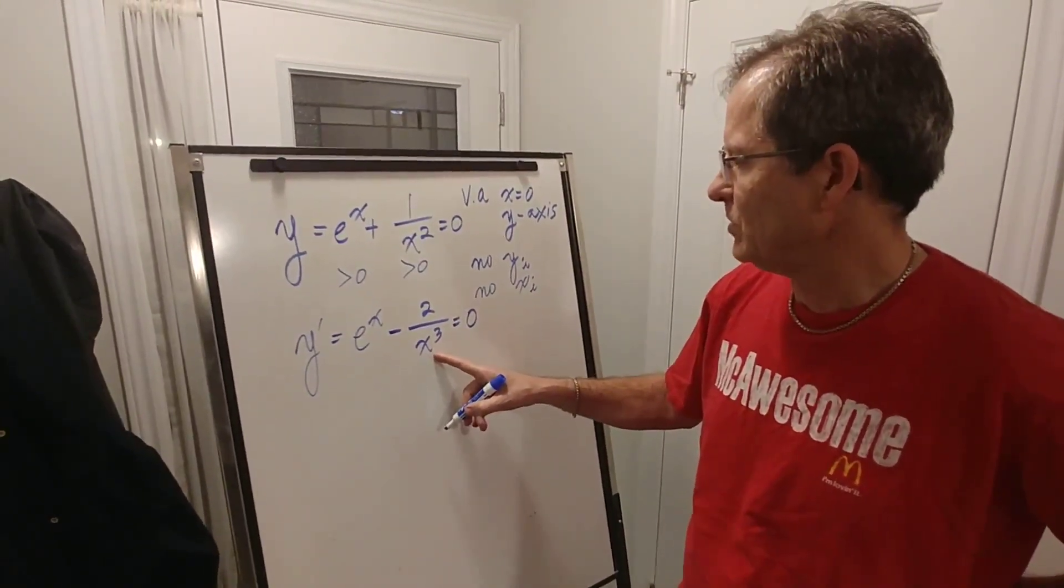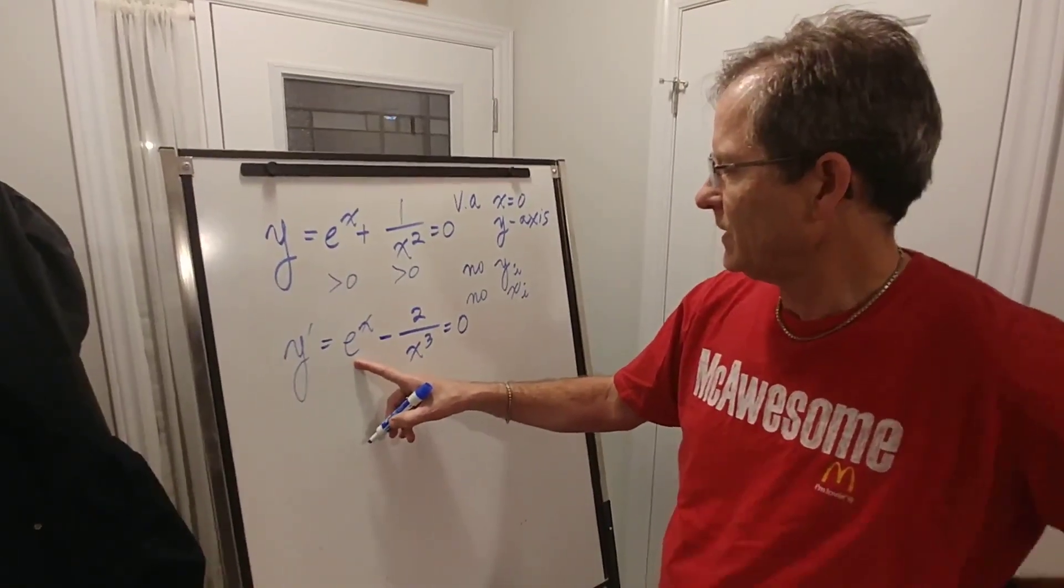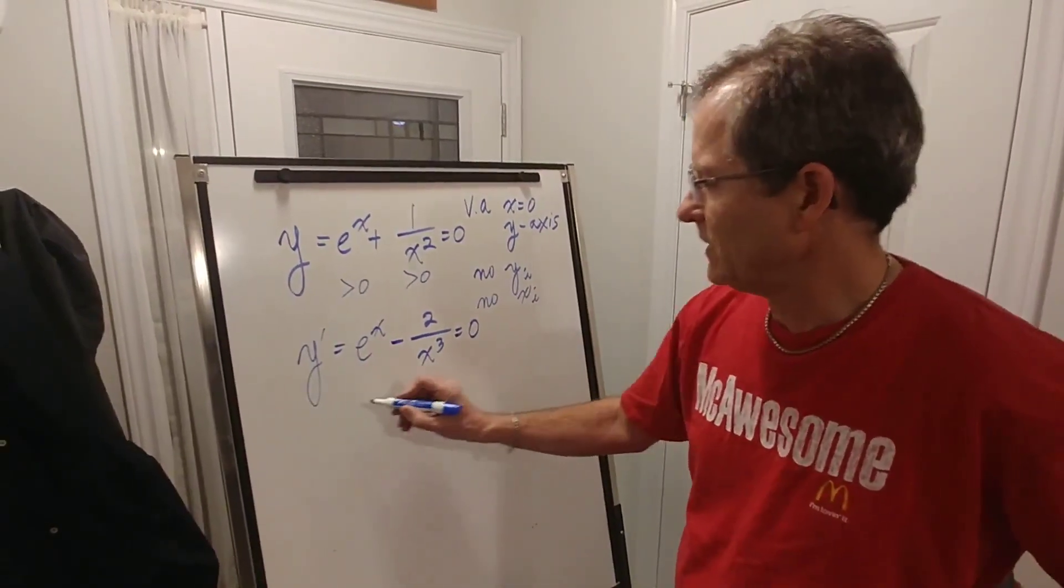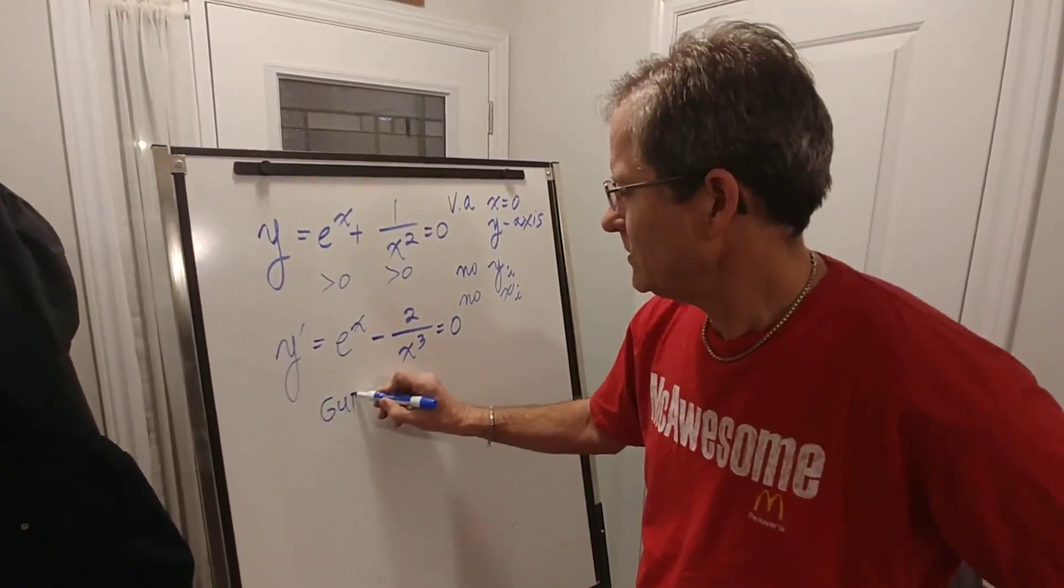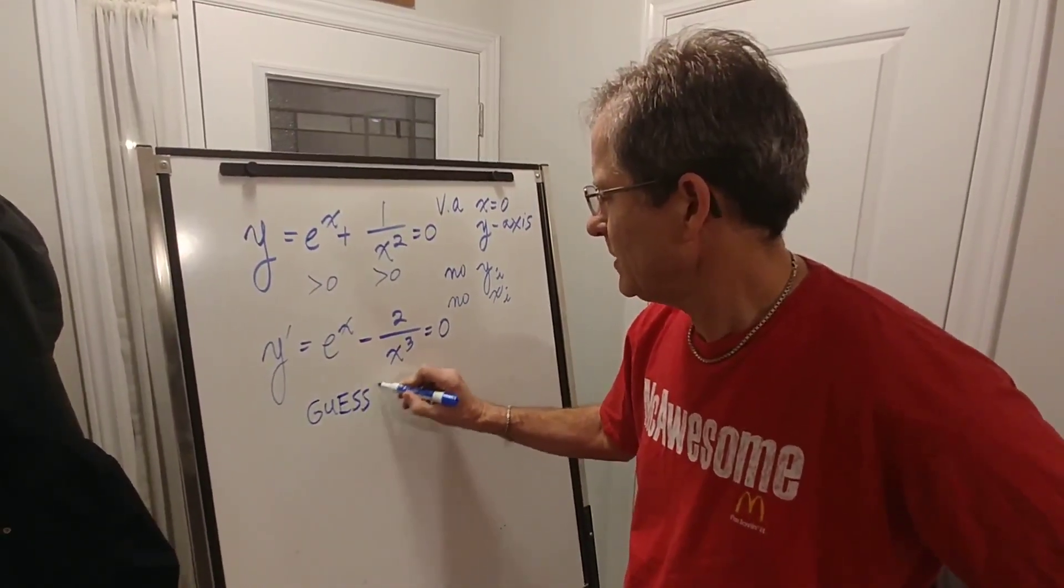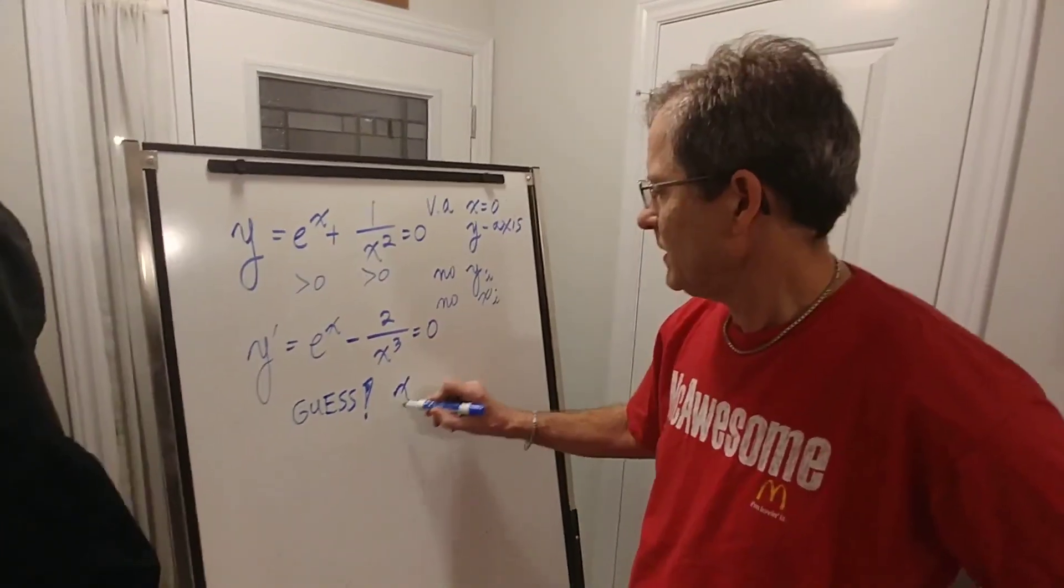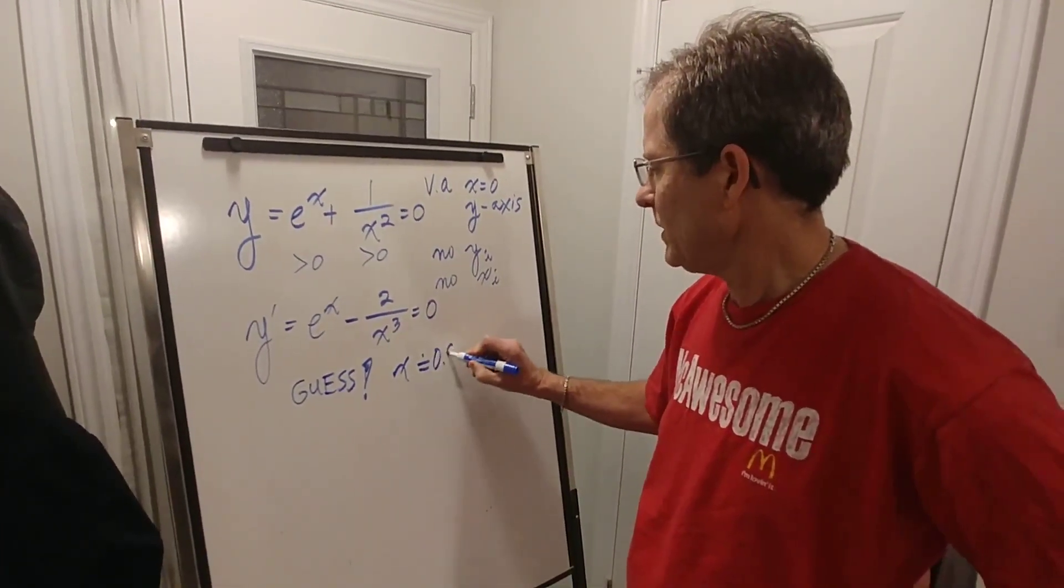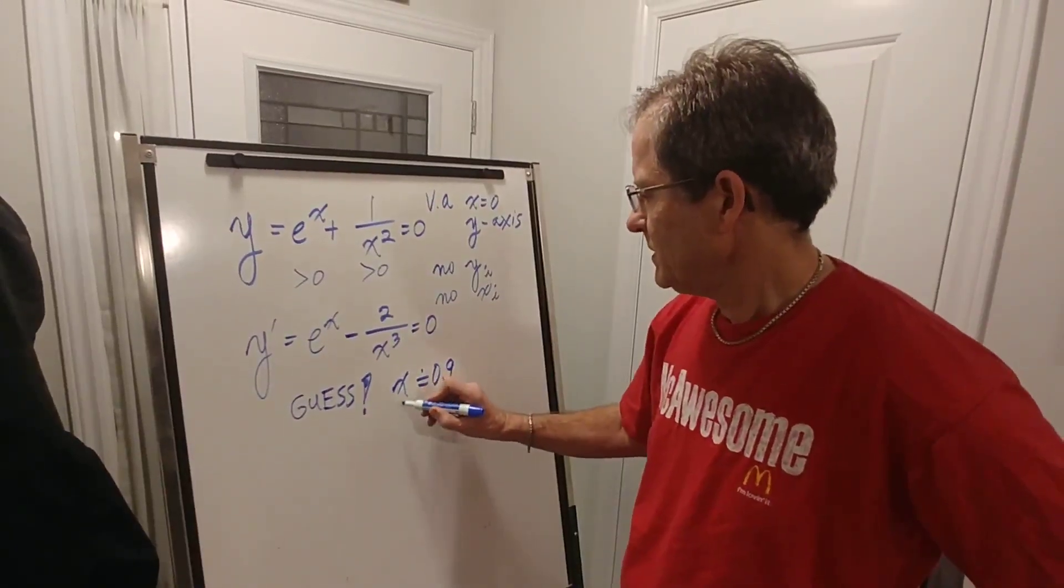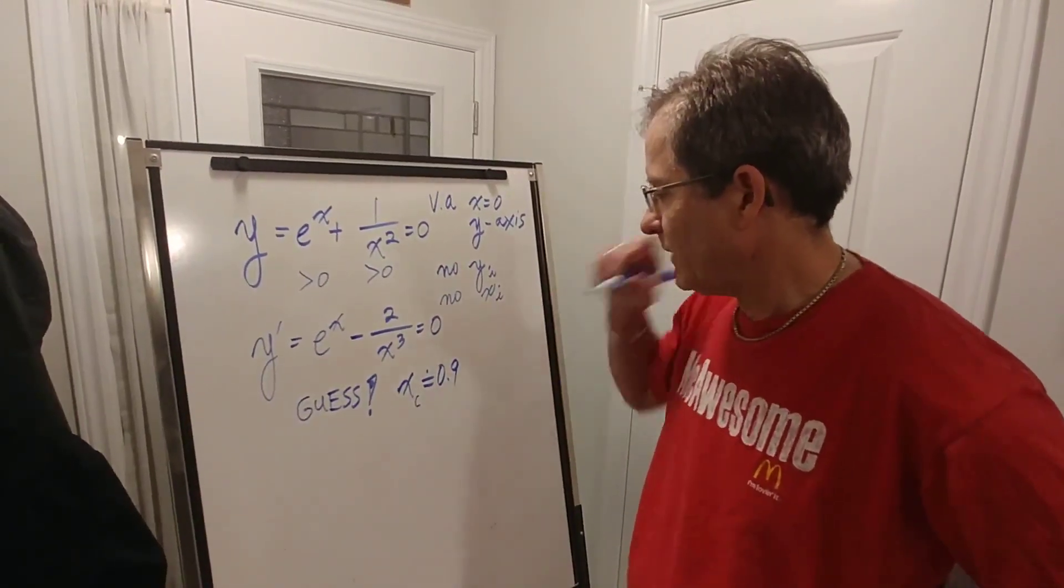You can't take the cube root, that doesn't work. You can't take the natural log, that doesn't work. It turns out you have to guess, believe it or not. Students don't like that because they want to be able to calculate it, but sometimes you can't. And it turns out that x is approximately 0.9. We'll see that later. That's called the critical value.